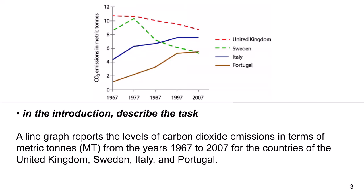In the introduction, describe the task. A line graph reports the levels of carbon dioxide emissions in terms of metric tons or MT from the years 1967 to 2007 for the countries of United Kingdom, Sweden, Italy and Portugal.